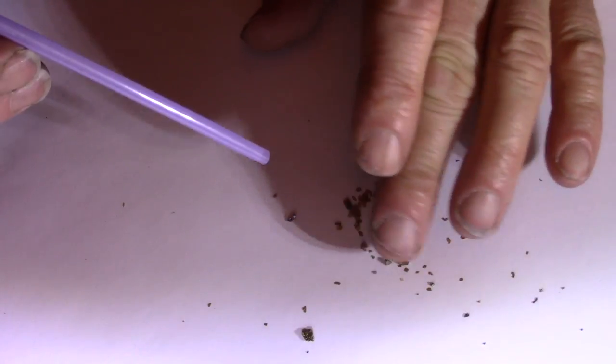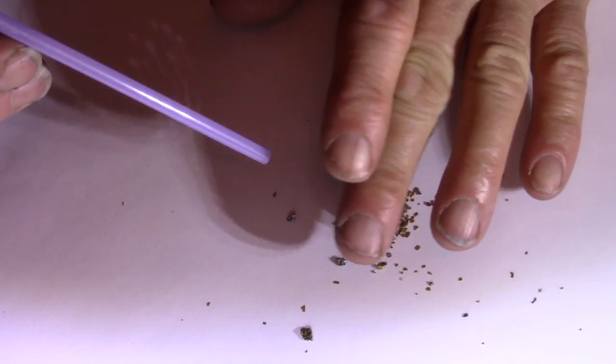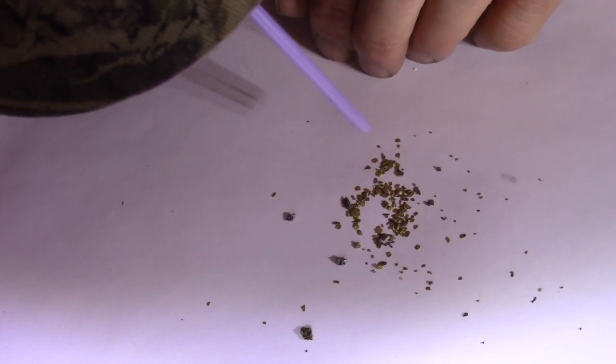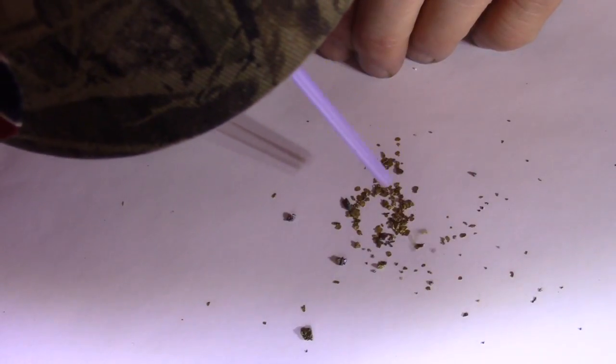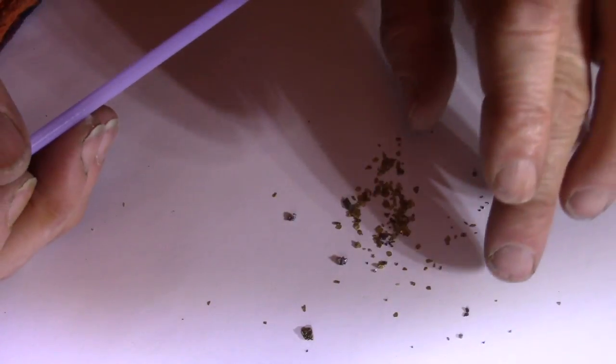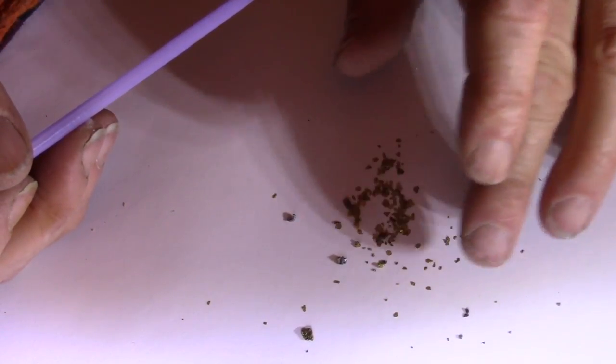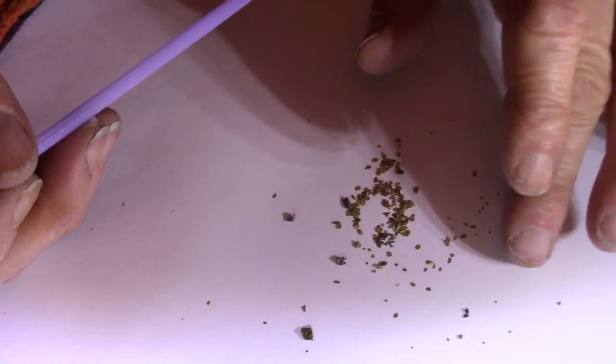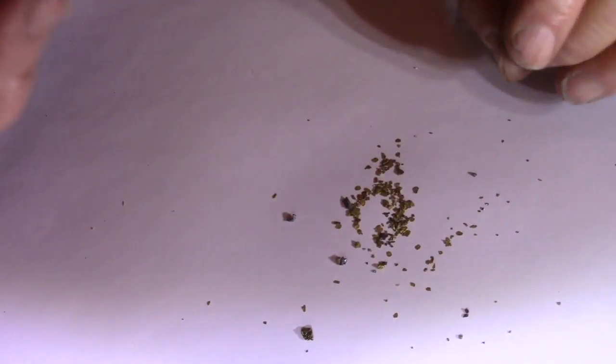The black sands are still lighter than the gold. So if you do it gently, the gold will stay in place and the black sands will push away. Now some of the gold might try to do a run on you. Just push it back in.